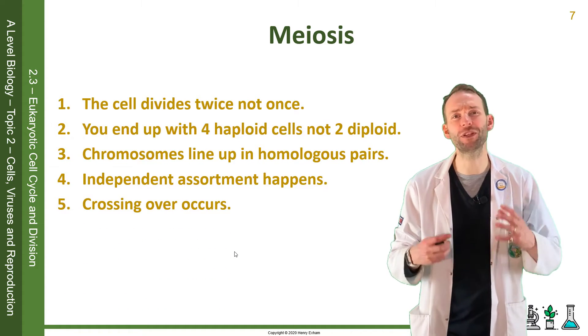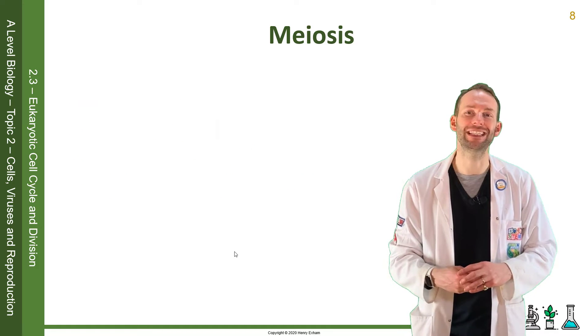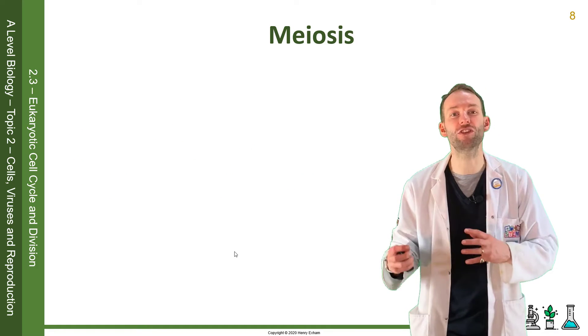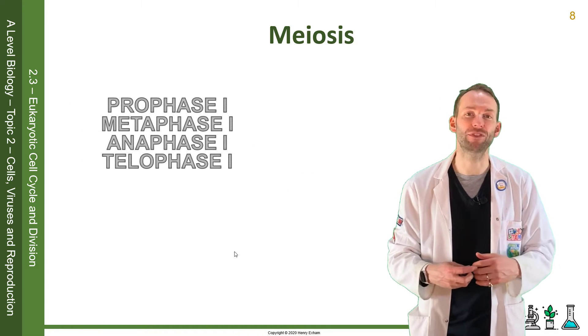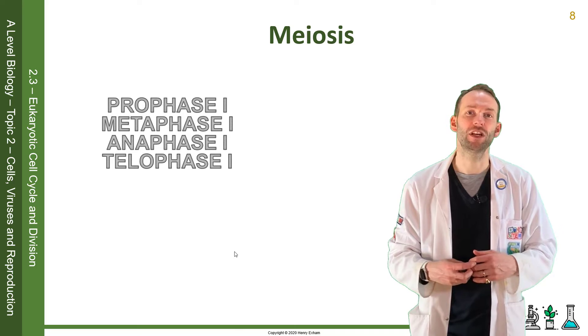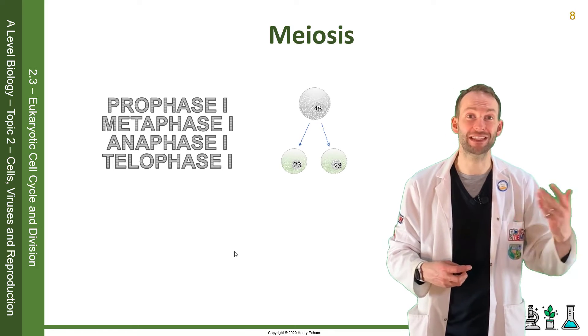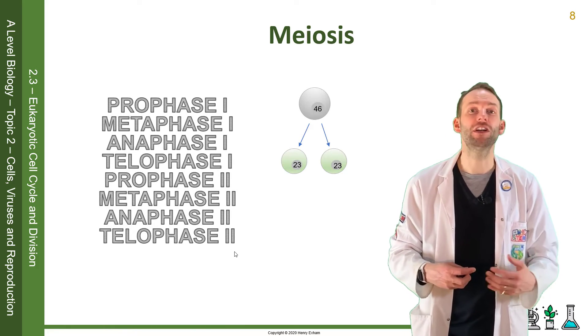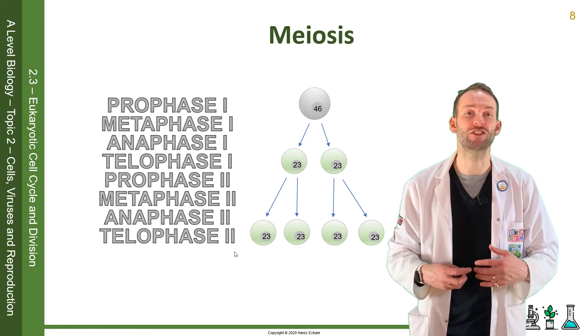In meiosis, we use the same names for the phases, but because there are two divisions, each phase happens twice. So prophase, metaphase, anaphase, telophase 1 — and then prophase, metaphase, anaphase, telophase 2.